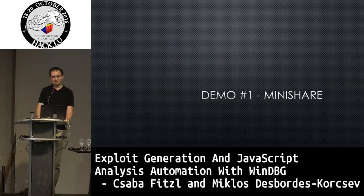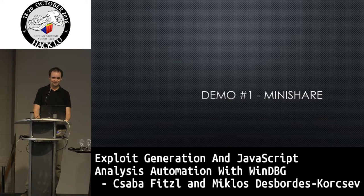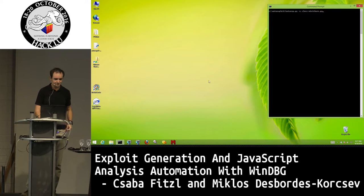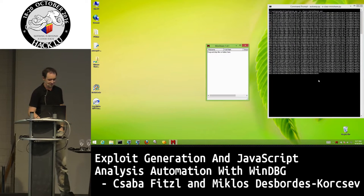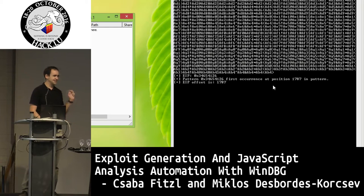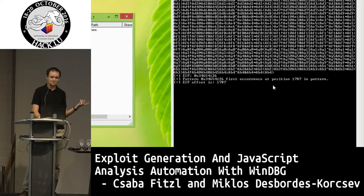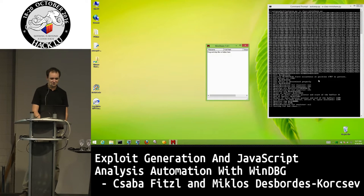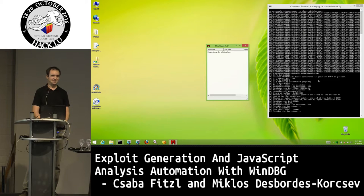We have a demo. We didn't sacrifice any animals for the demo gods, so we decided to go with videos rather than live demonstrations. The tool starts by sending in a Metasploit-style cyclic pattern and identifies the EIP overwrite offset. For the demo I'm using MiniShare, a very old application, but it's great for demonstration. You can see the application restarting in the background.